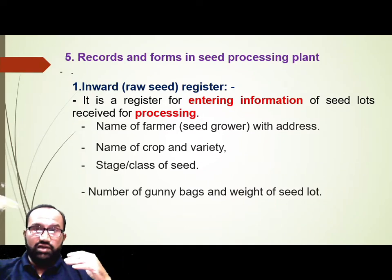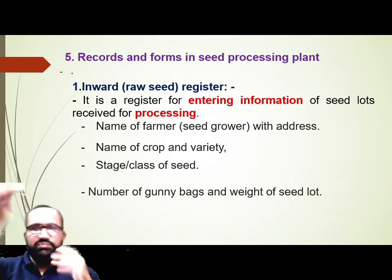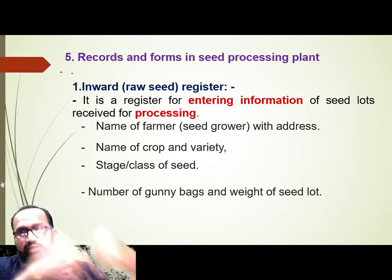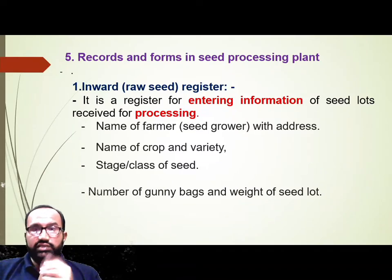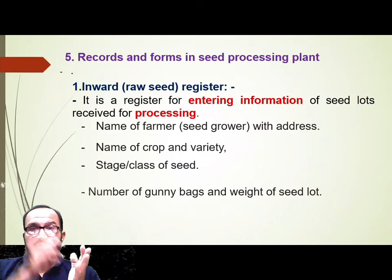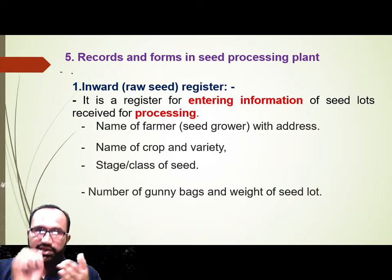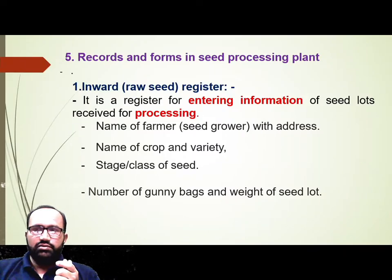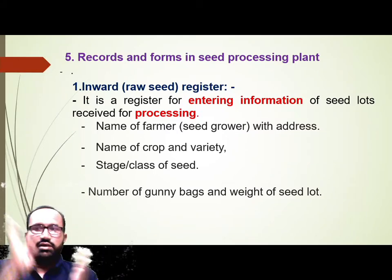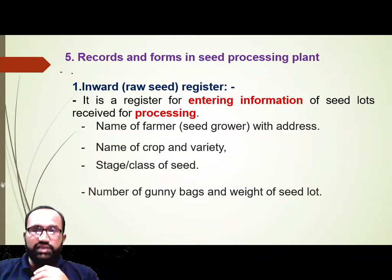When seed comes from a seed production plot, it is assigned a lot number. When the seed grower brings the seed from the field, a lot number is given at the start. That lot number is marked and noted. The entry is made in the Inward Register: what is the lot number, what seed has come for processing, and all details are recorded as per that lot number.